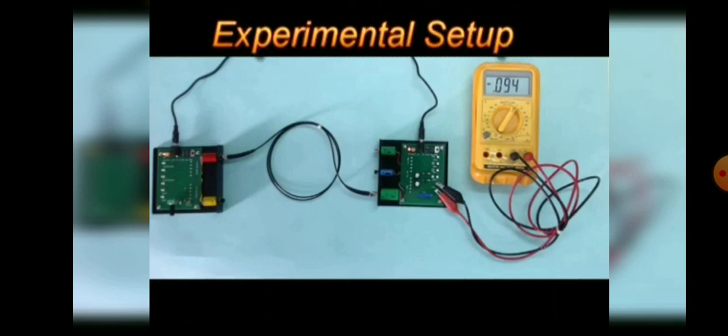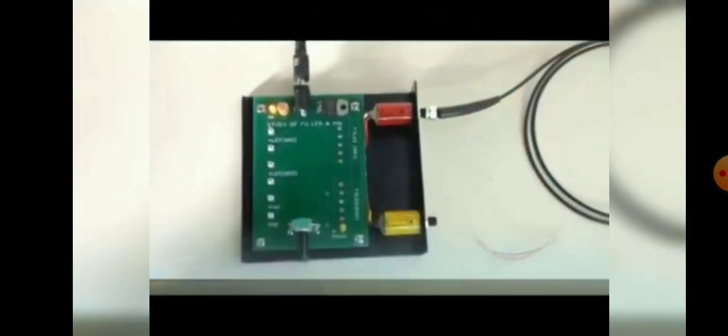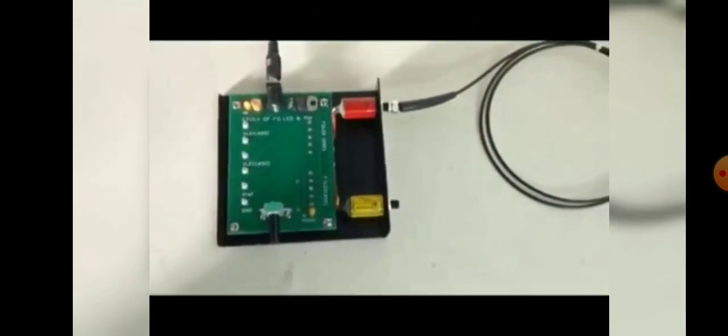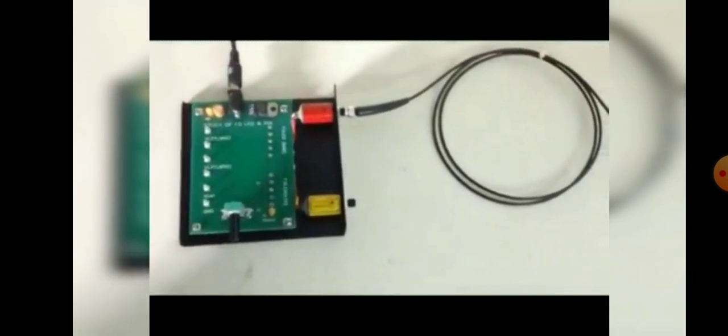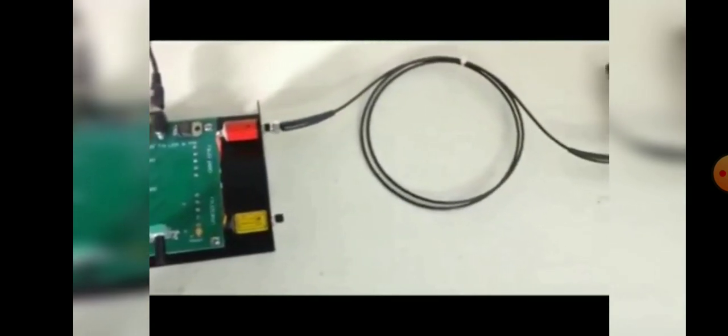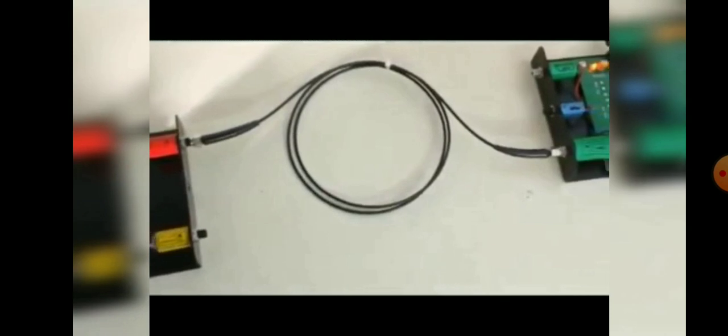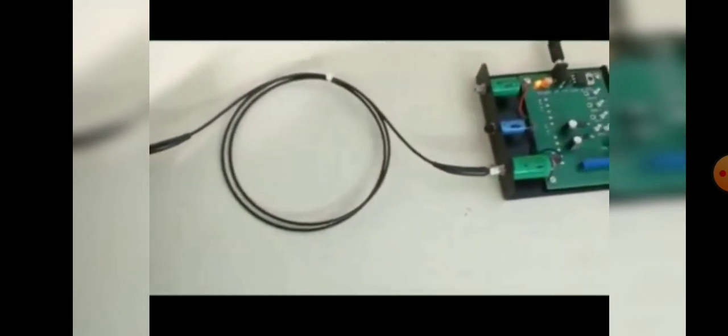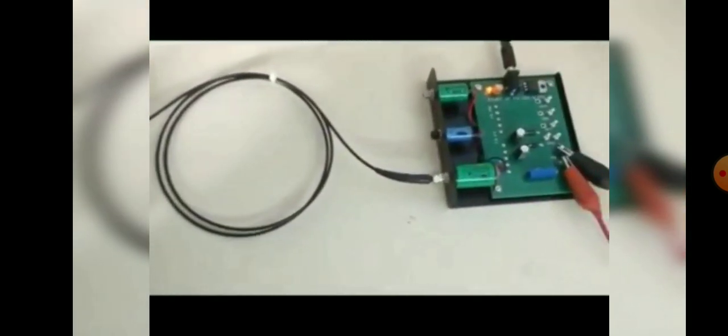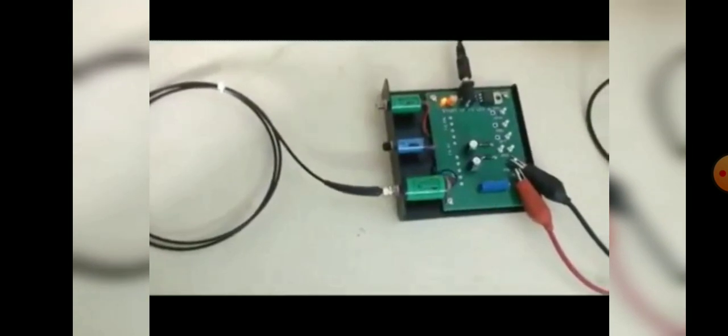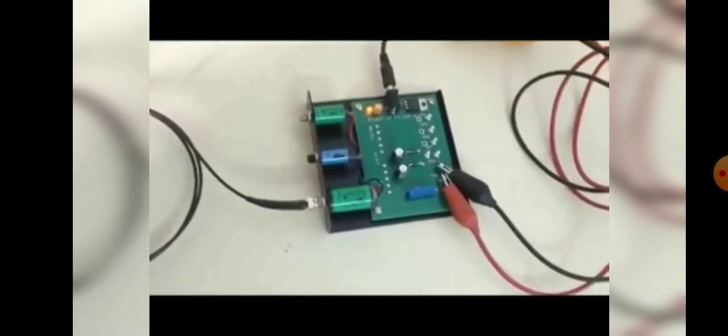Experimental setup. Power the system up, connect a digital multimeter across VRF in the range 2000mV. Adjust and set IF knob to set VRF to 1000mV. This corresponds to an IF of 10mA in the FO LEDs. Now connect one end of the fiber optic cable to the FO LED 660 port. Record the VF for FO LED 660.